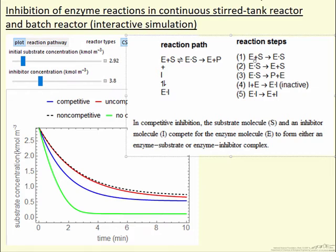What I've selected in the simulation, I can select the reaction pathway, and if I do that I'll get something that looks like this. So I've selected, in this case, competitive inhibition.